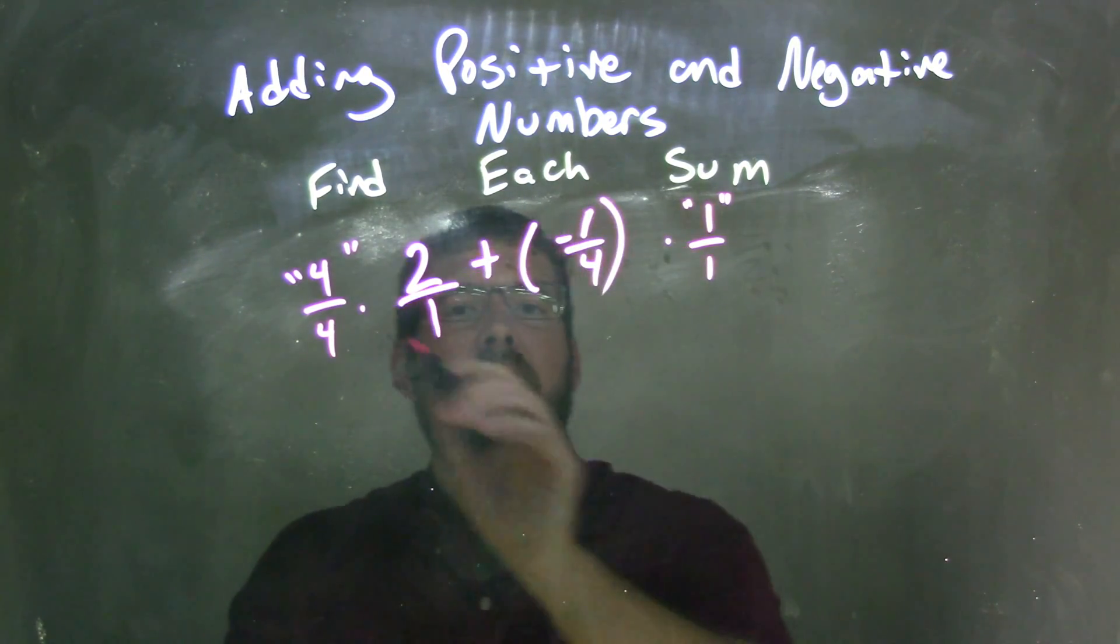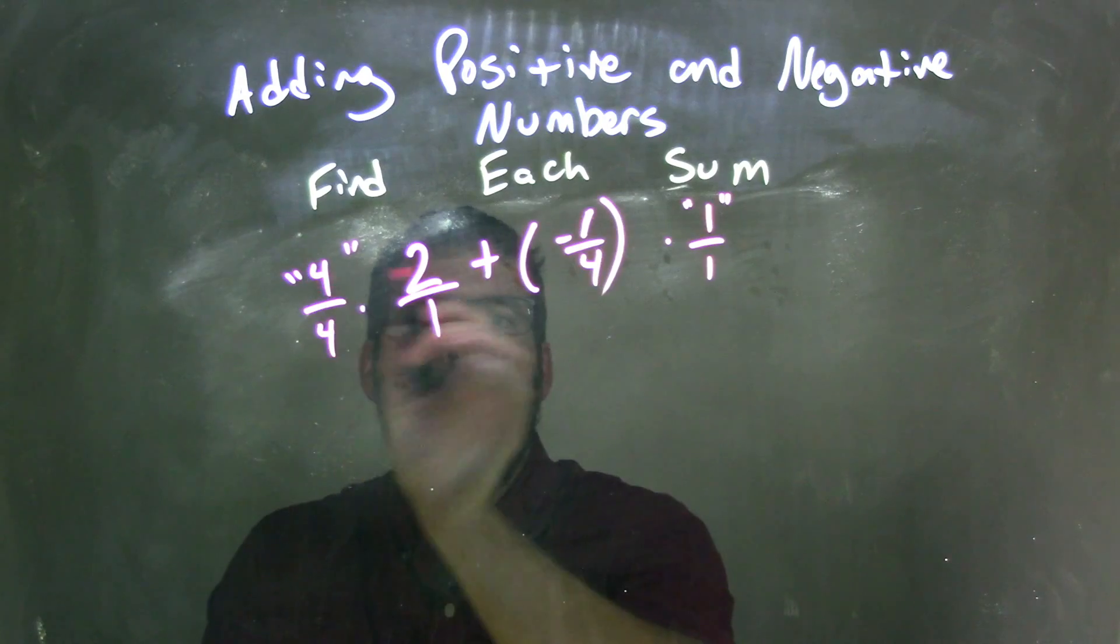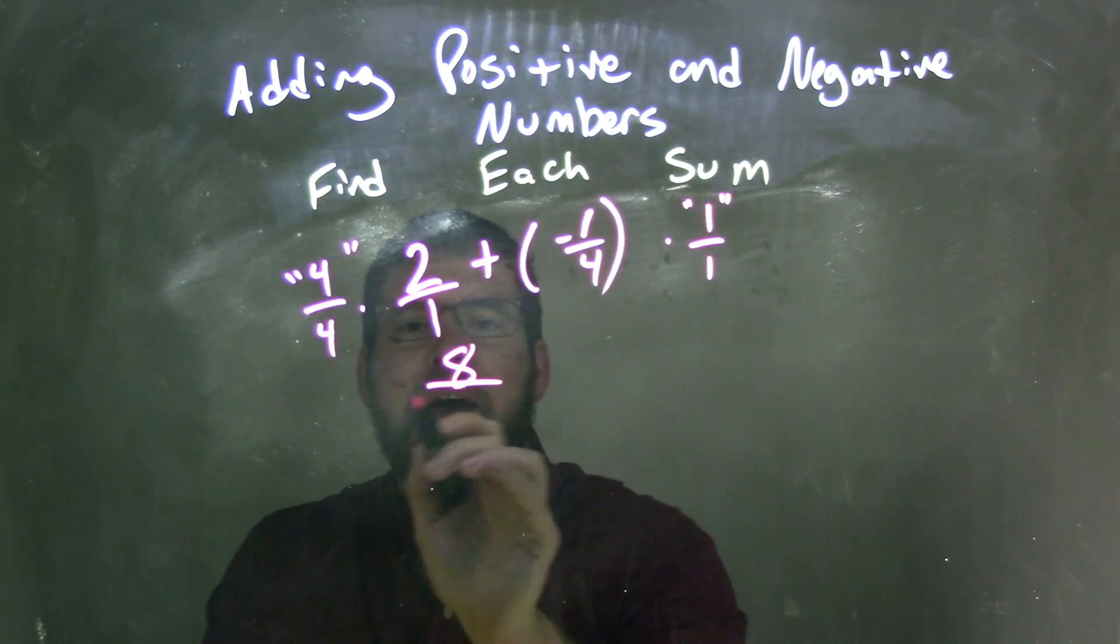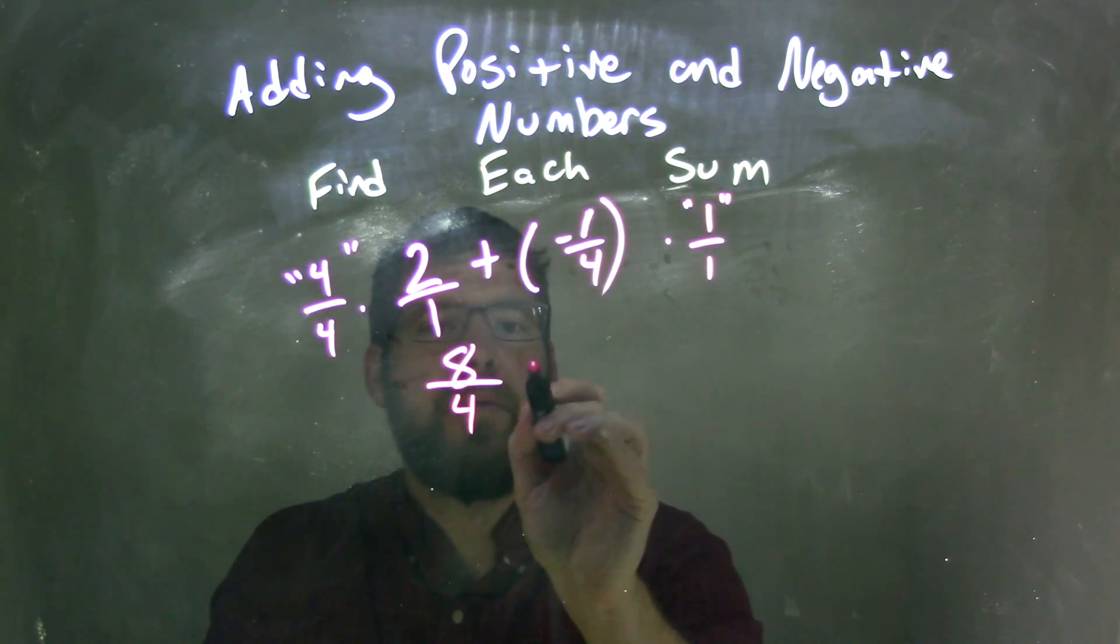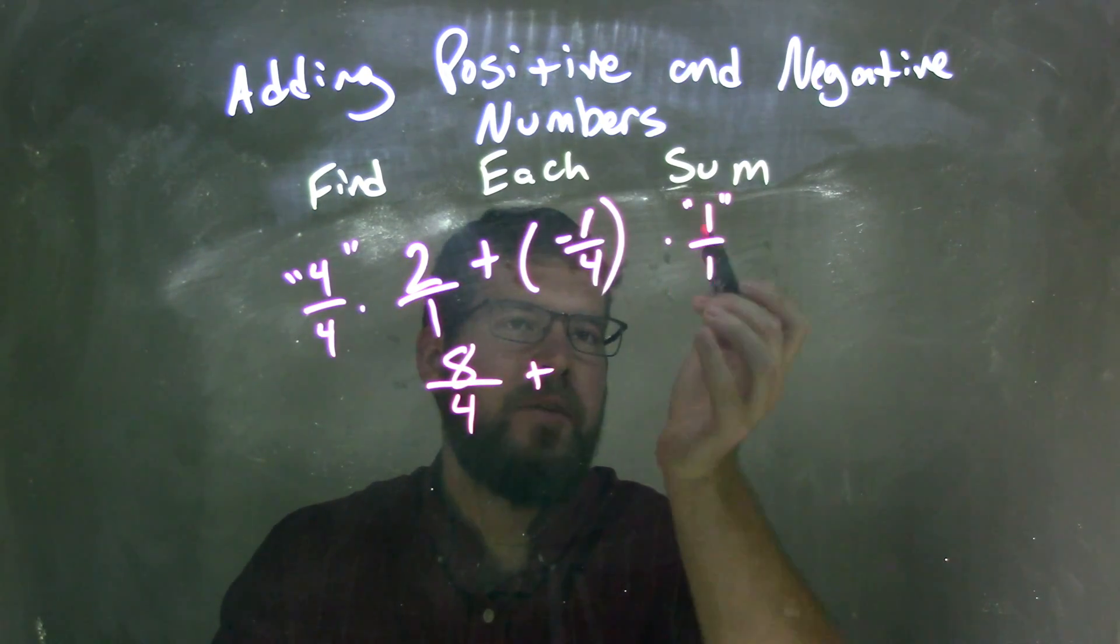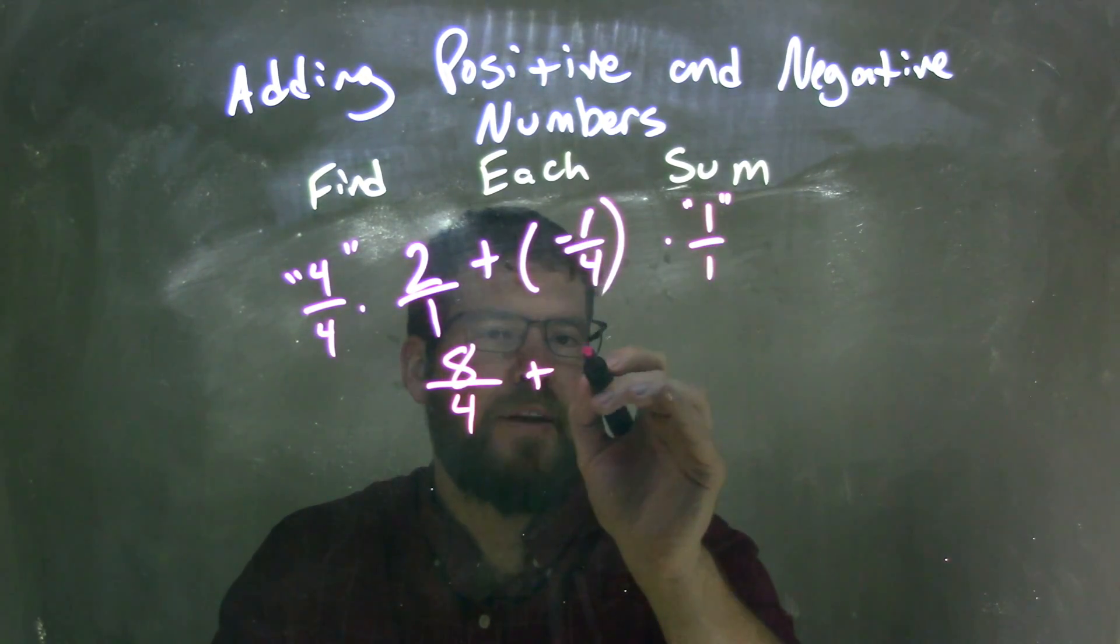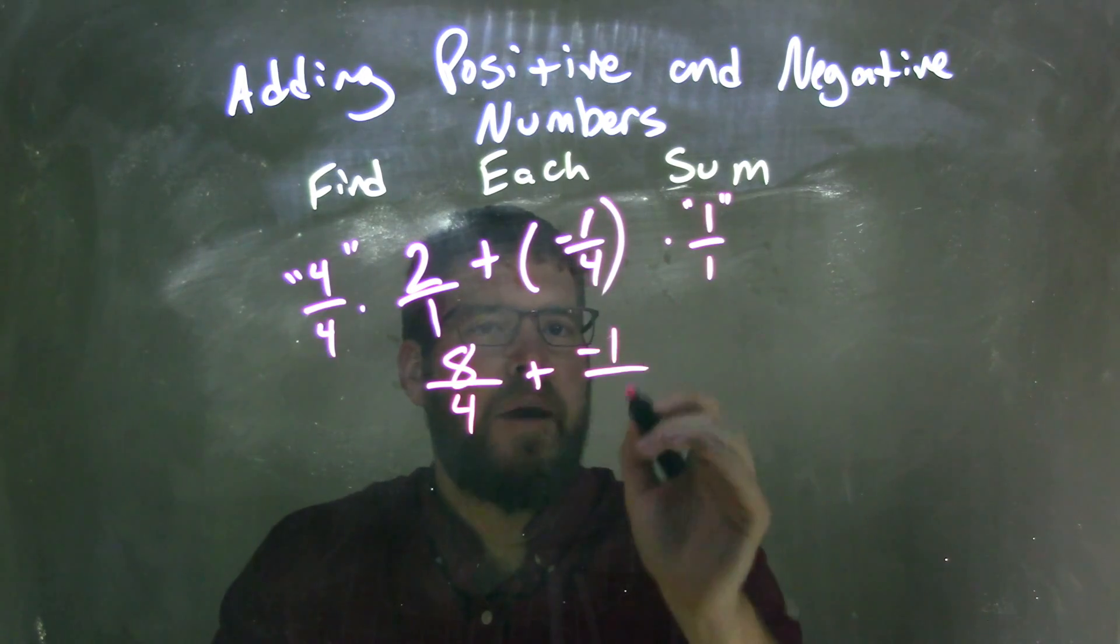And what that allows me to do is to find a common denominator. 4 times 2 is 8, and 4 times 1 is 4. Plus, right side, well negative 1 fourth times 1 over 1, negative 1 times 1 is negative 1, and 4 times 1 is 4.